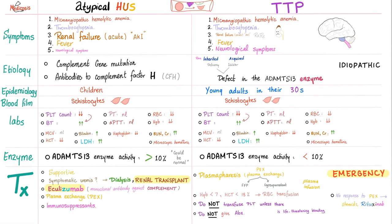Regarding etiology: atypical HUS is caused by complement gene mutation or antibodies to complement factor H, while TTP is caused by a defect in ADAMTS13 — either a deficiency (inherited TTP) or an inhibitor (acquired TTP). Epidemiology: atypical HUS affects children; TTP affects young adults. On peripheral smear, we see schistocytes — also called helmet cells or fragmented RBCs — in both conditions.